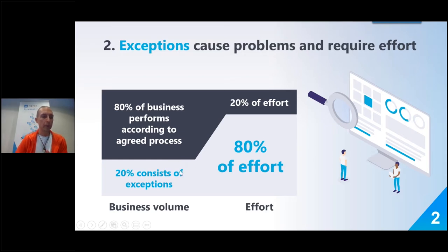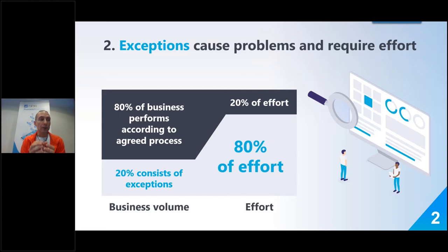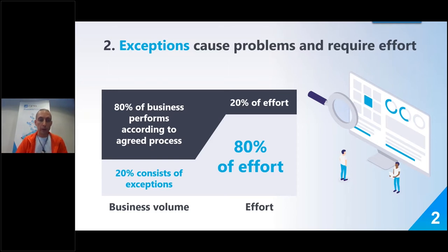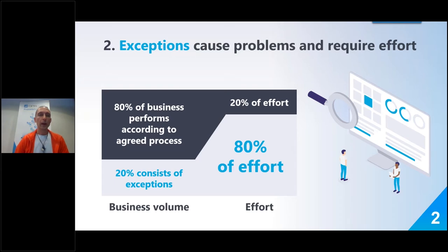With process mining, you can actually find those exceptional cases where you're spending a huge amount of effort. You can reduce that 20% of exceptional cases by half — cutting up to 40% of your effort. That effort is rework, process waste, repetition, customers not getting the right goods, the process not delivering on time — all that extra hassle. With process mining, you can deal with the exceptions, and that's a really good thing to keep in mind.